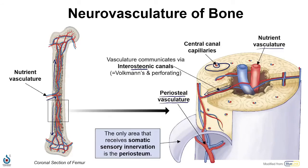In terms of the innervation of bone, sensory nerves do reach all aspects of bone just by following the blood vessels. Interestingly, only the periosteum receives any somatic sensory innervation — the type that's more localized. So if someone has a broken bone, any pain they feel is related to damage to the periosteum rather than the bone itself. The visceral sensory fibers that course throughout the bone aid in the regulation of bone homeostasis and growth.